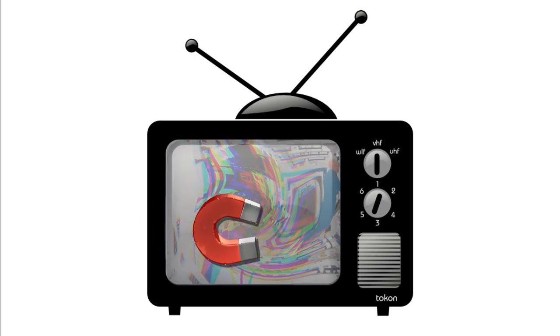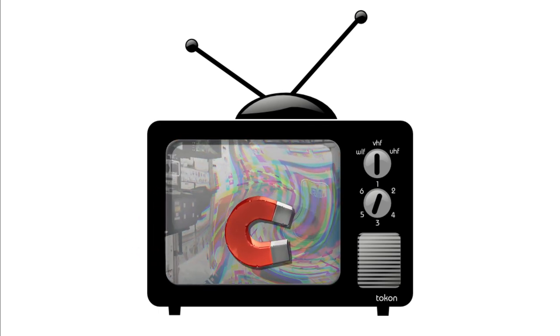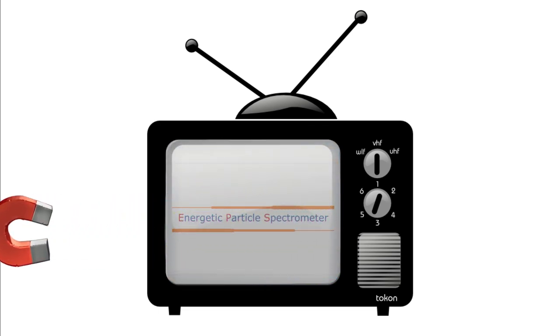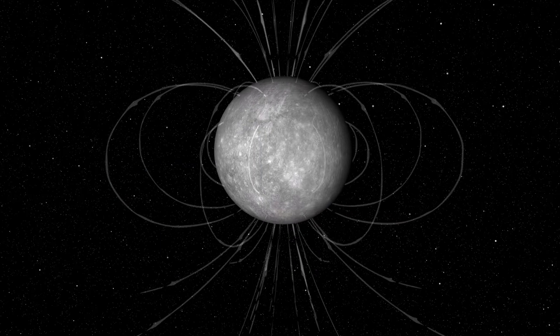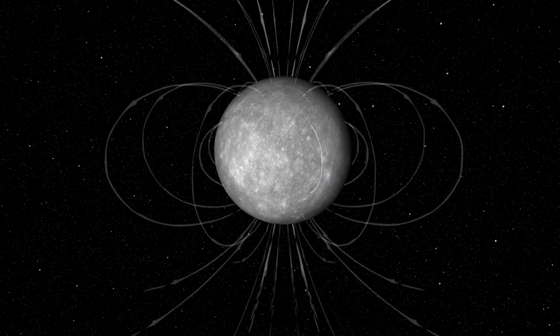An example would be measuring the distortion a magnetic field has on a CRT television. So today, we're going to look at a device called the Energetic Particle Spectrometer or simply EPS.